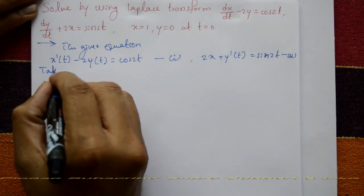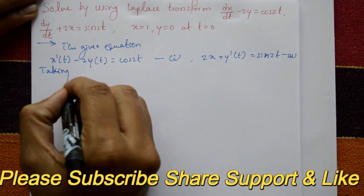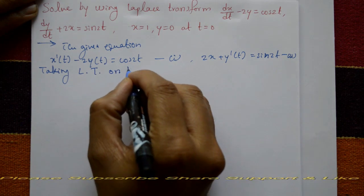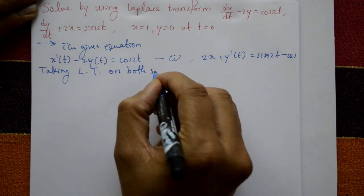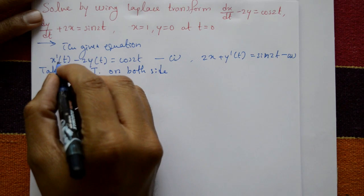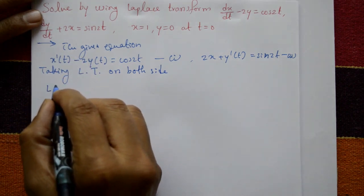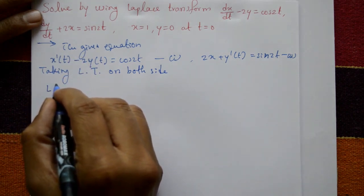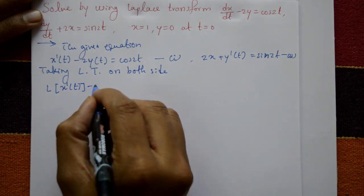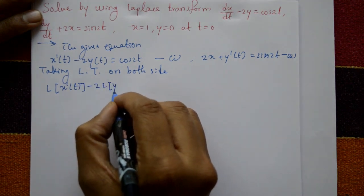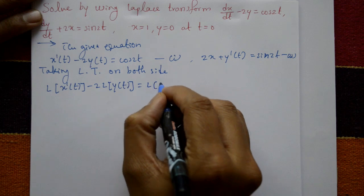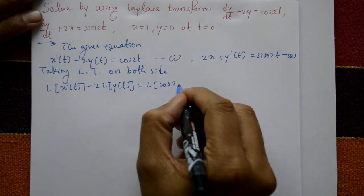Taking Laplace transform on both sides of equation 1: L{x'(t)} minus 2·L{y(t)} equals L{cos 2t}.